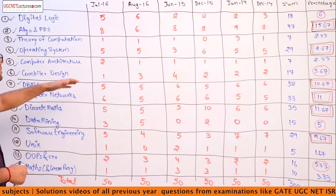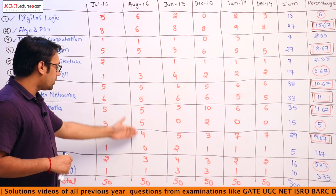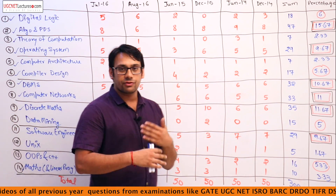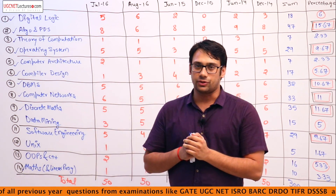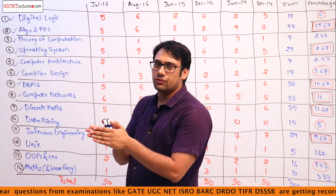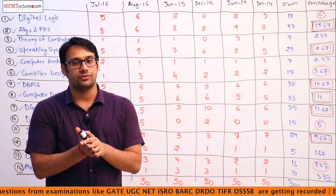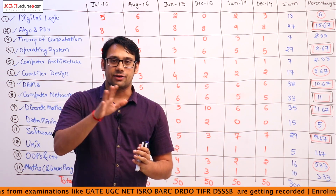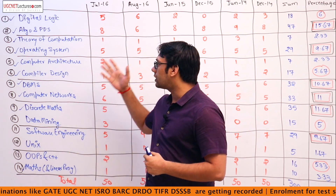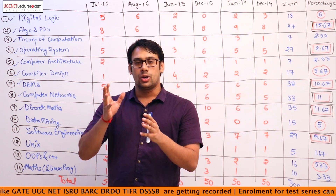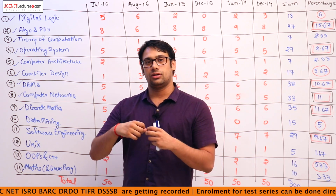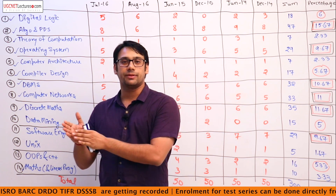For the August 2016 examination you can see the total details for each subject. From this you can make a simple analysis for paper 2. We will then come to the next video about paper 3 analysis, and after covering both paper 2 and paper 3 we will plan a strategy on which subjects contain the maximum percentage and where you should focus more.